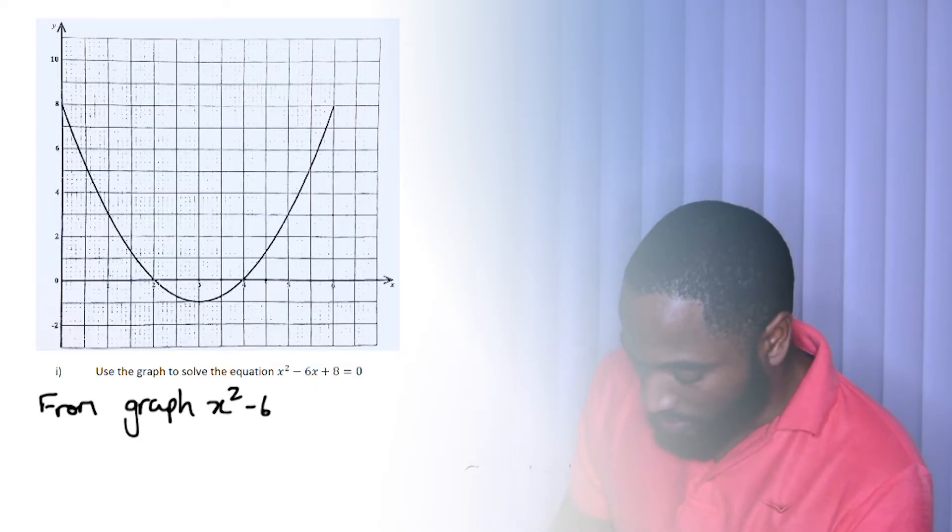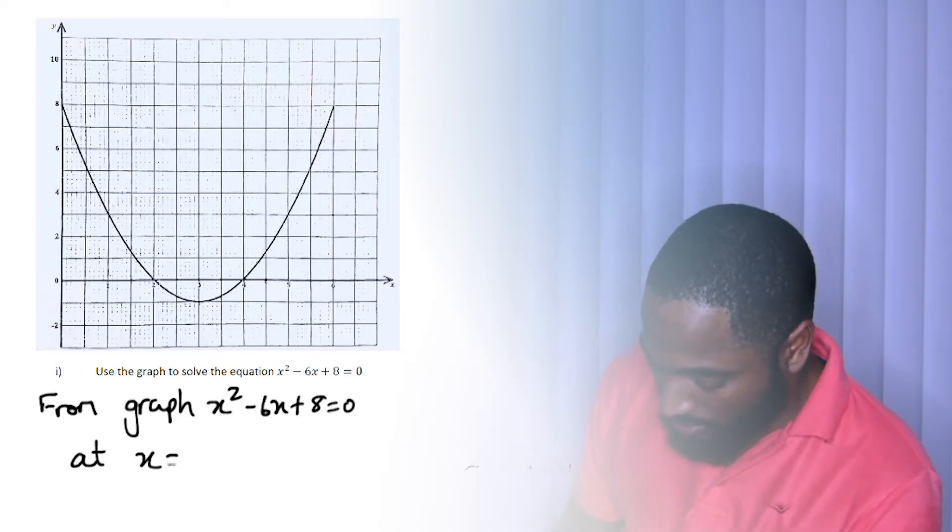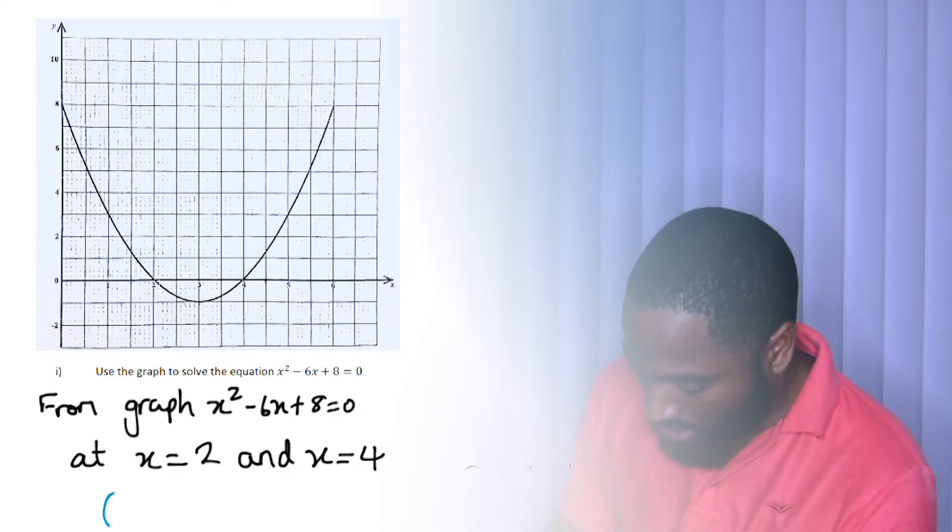From graph, x² - 6x + 8 = 0 at x = 2 and x = 4. And we'll just bring something like x-intercepts, just for kicks.